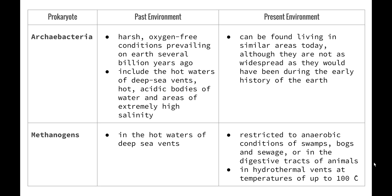Methanogens cannot live in the presence of oxygen and are now restricted to anaerobic conditions of swamps, bogs, and sewerage, or in the digestive tracts of animals. They can also be found in hydrothermal vents at temperatures of up to 100 degrees Celsius. The fact that sulfur and iron bacteria have been found in the hot waters of deep sea vents also lends support to the hypothesis that similar archaebacteria in these areas were the first life forms on Earth.